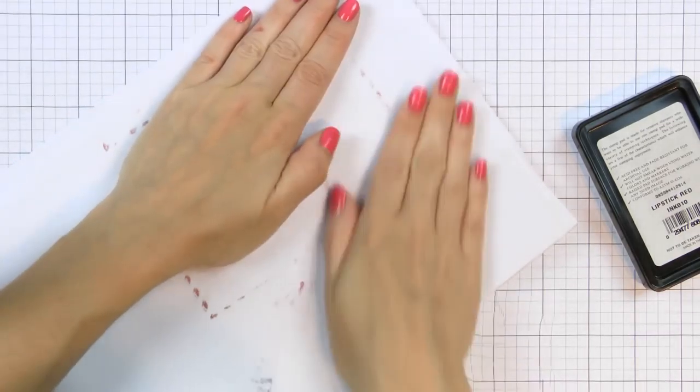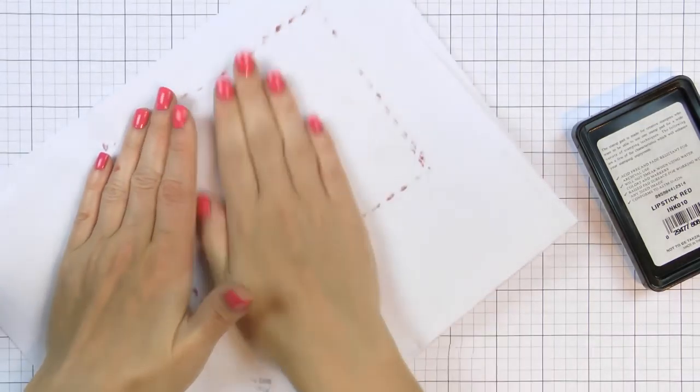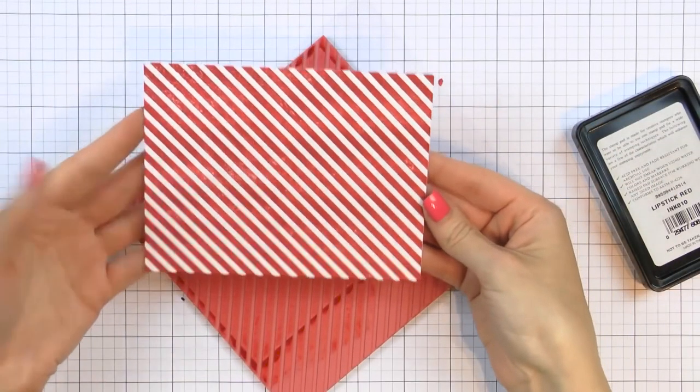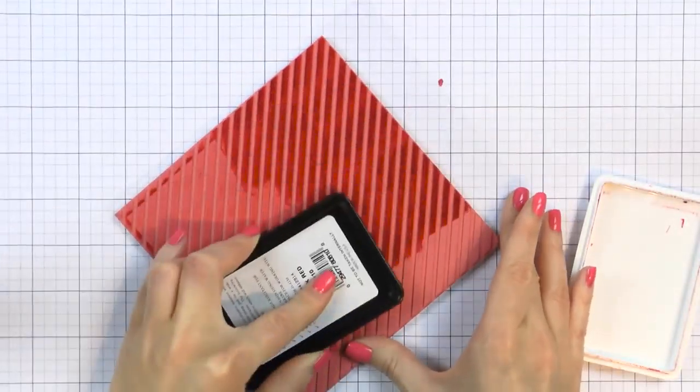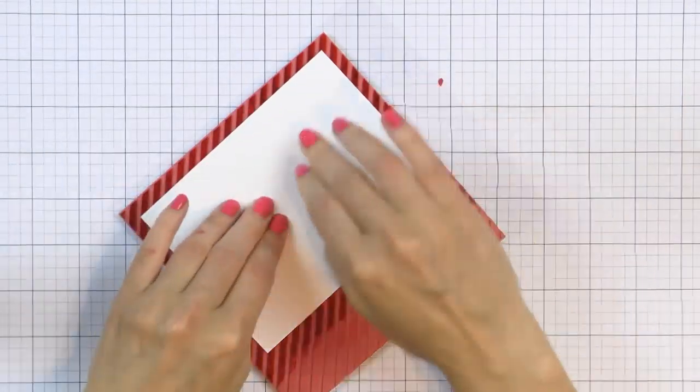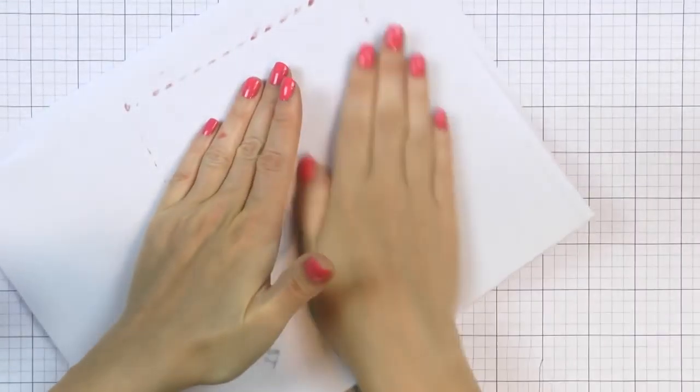When I filmed this video I didn't yet have my bigger size MISTI stamp positioner, so I stamped those by placing the stamp upside down onto my work surface, I inked it up, I added my white cardstock panel on top, I placed a piece of paper over it, and I pressed down with my fingers to transfer the ink.